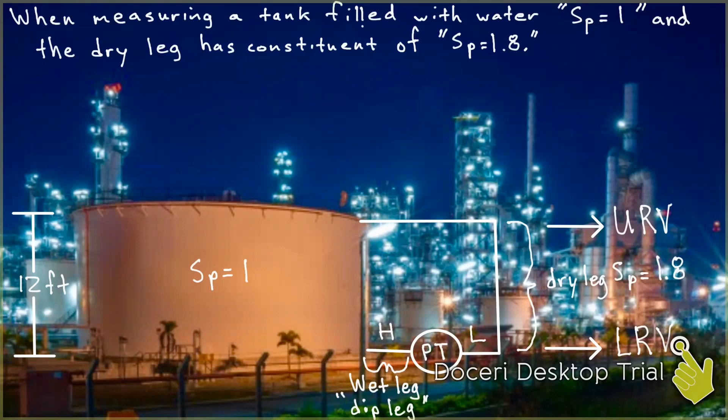And then the pressure transmitter on the right hand side has the low pressure, which is the dry leg, and the constituent's specific gravity of 1.8. The lower range value and the upper range value is what we're going to do next. We're going to calculate that lower range value.